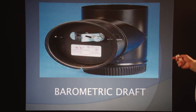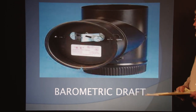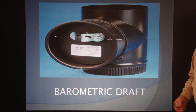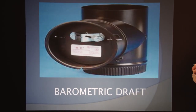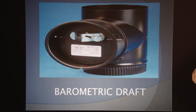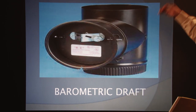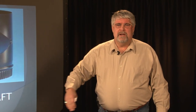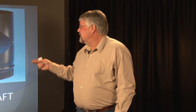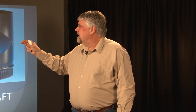Barometric draft. Barometric draft is basically something put on a flue to adjust. It's a balanced damper device attached to a chimney vent connector or fuel gas manifold to protect combustion equipment by cooling and controlling chimney draft. We don't want too much chimney draft affecting the combustion air of a gas-fired appliance. This barometric draft calculates and adjusts how much draft enters the flue or chimney.